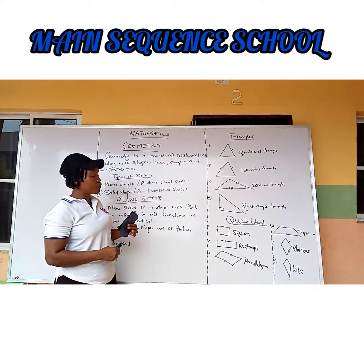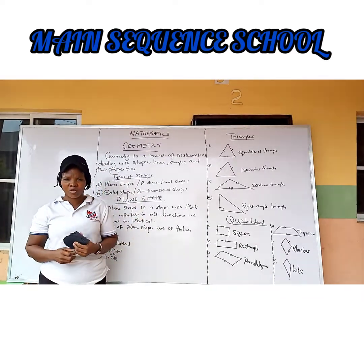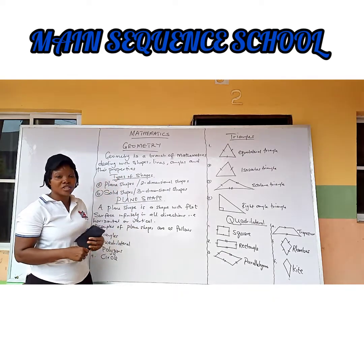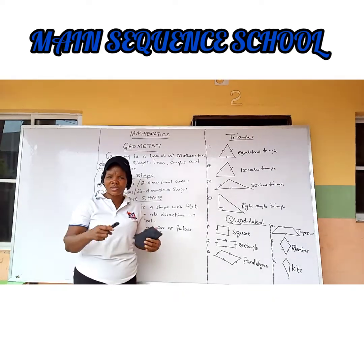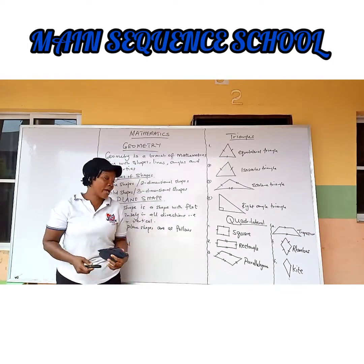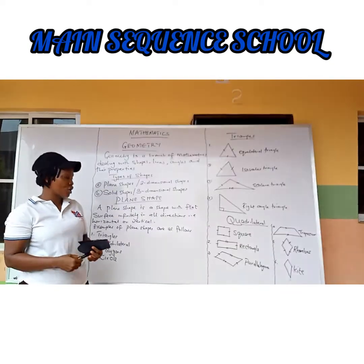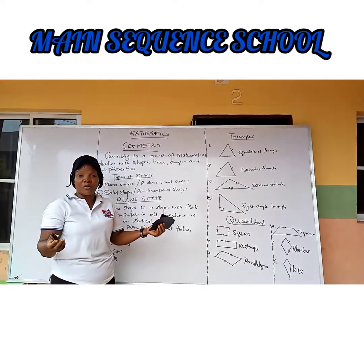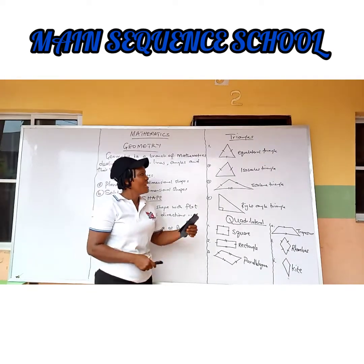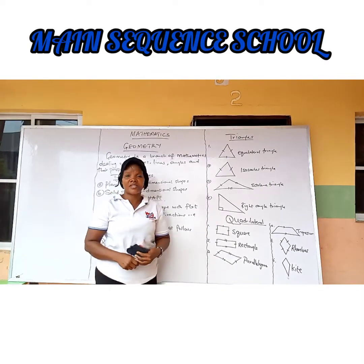At the end of the lesson, the learner should be able to define what geometry is all about, mention the types of geometry and the types of shapes, explain what a plane shape is and give some examples of plane shapes, and identify different kinds of shapes.